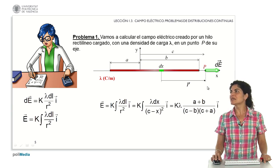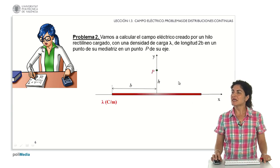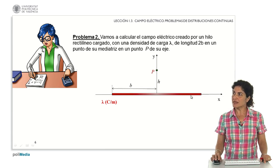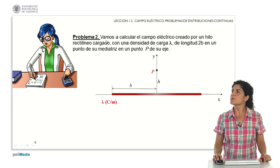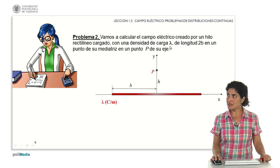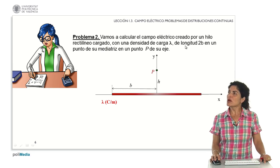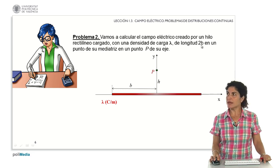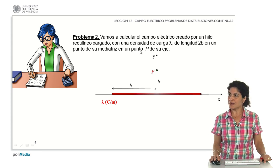We are now going to complicate things a little more and analyze a point that is not on the axis but outside it. We will calculate the electric field created by a rectilinear wire with charge density lambda, total length 2b, at a point on its perpendicular bisector — the mediatrix — at point P.